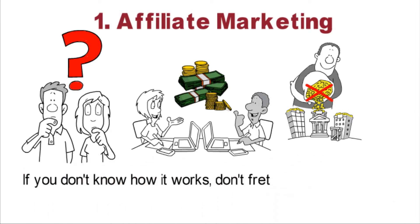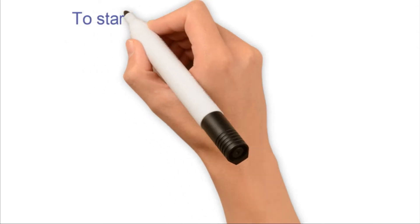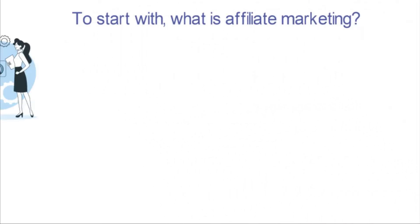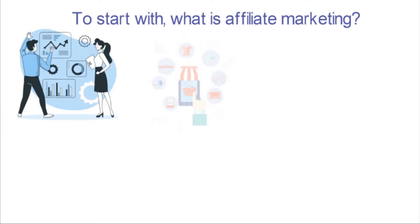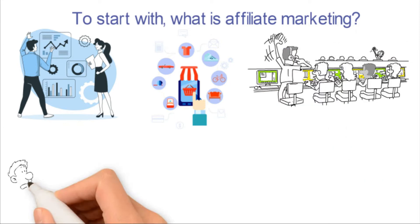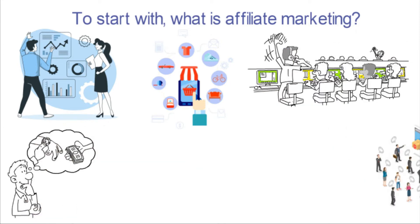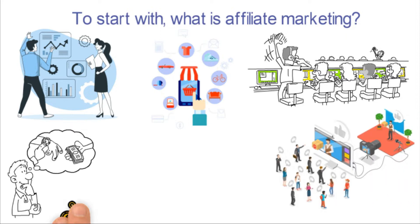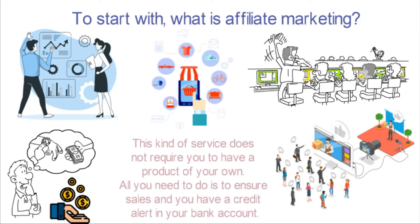If you don't know how it works, don't fret — we've got you covered. Affiliate marketing has to do with promoting and positioning the value, goods, and services of others to potential buyers, which will earn you a commission once the sale is made. In simple terms, you advertise a product to people who are willing to buy and you get a monetary reward once the transaction is completed. This kind of service does not require you to have a product of your own.